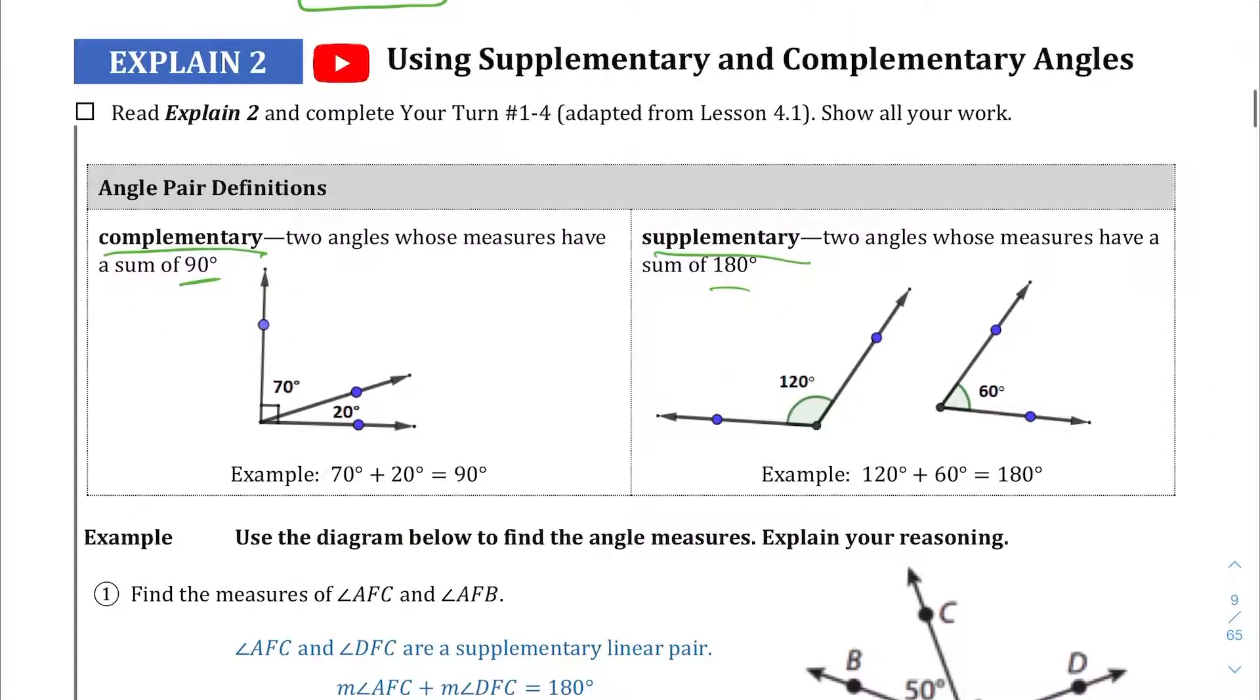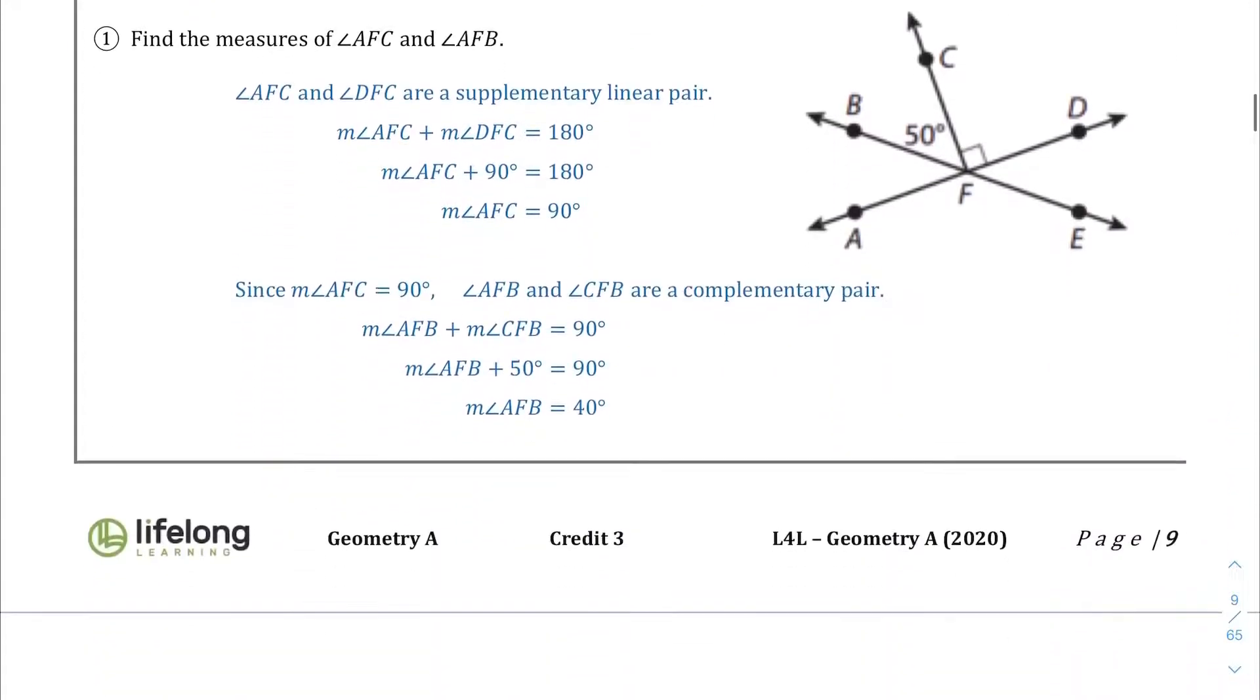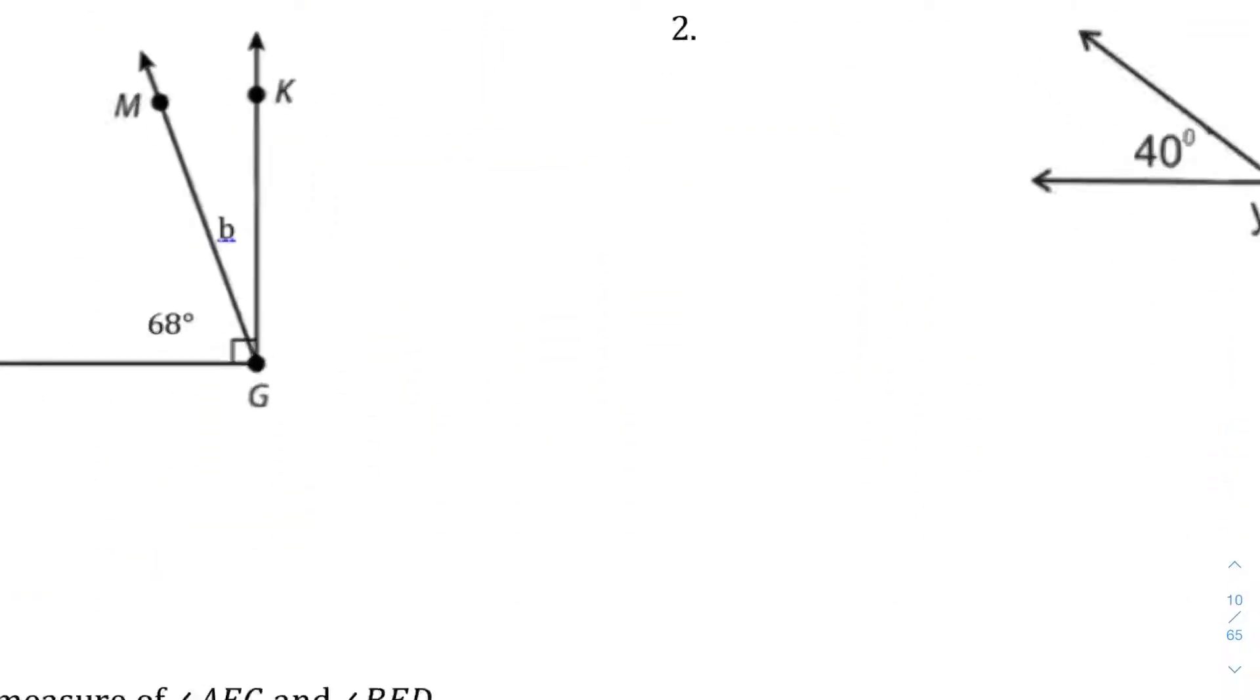Explain two, we're going to do the same thing we did with the vertical angles, except we're going to use our knowledge of supplementary and complementary angles. Just in case you forgot, complementary angles equal 90 degrees. Supplementary angles equal 180. You can read that example if you want, but as far as I'm concerned, I'm going to jump to these questions.